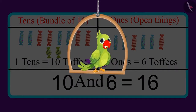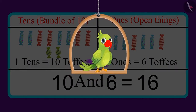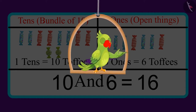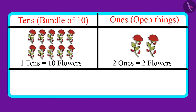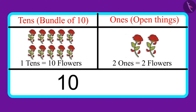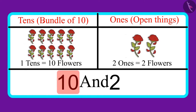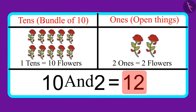Your answer was also the same, right? Very good! Come on, let's look at another similar example. Here are some flowers. There are one ten and two ones in their number. Can you tell me how many flowers are there? One ten means ten flowers and two ones means two flowers. Ten and two — which means these are twelve flowers.